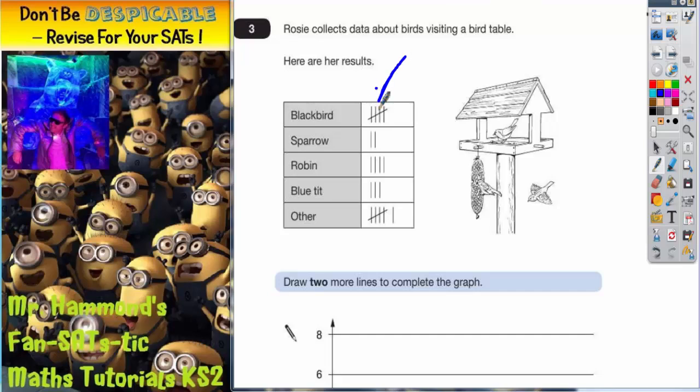Now as you can see she's provided her results in the form of a tally chart. Anytime you see a group of tallies like this, you've got to realize that this is a group of five. Often tally charts will do this in groups of five to make it easier for us to count. So before we go any further, let's have a look at how many of each type of bird we've got.